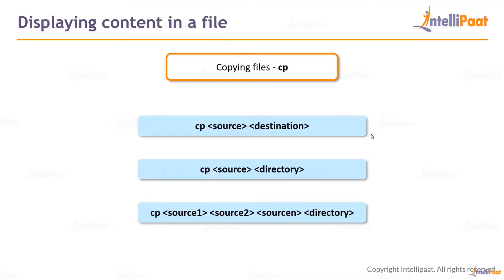First let's start off with copying. I've already shown you copying and move in the first module, but we'll look at them again. The command is 'cp', then source, then destination, or 'cp source to directory'. You can also provide multiple files: 'cp source1 source2 sourceN destination_directory'.